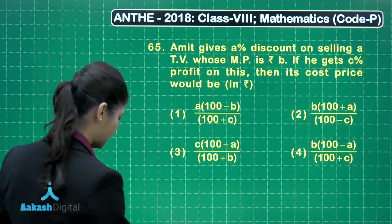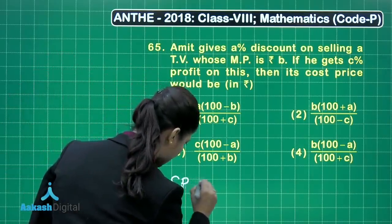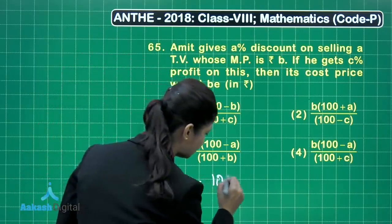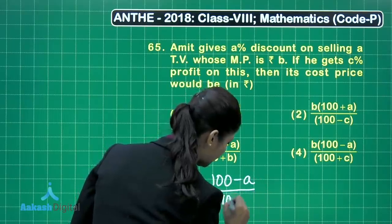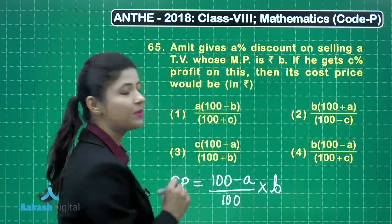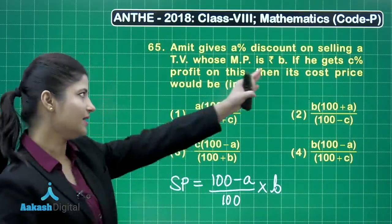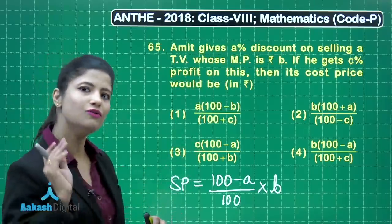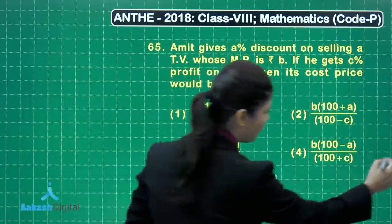You can obtain the selling price using the discount and mark price: selling price equals (100 minus discount percent a) upon 100, multiplied by mark price b. This gives the selling price from the discount and mark price. It is then stated that he gets c percent profit on this.